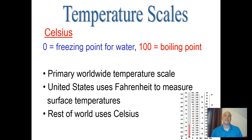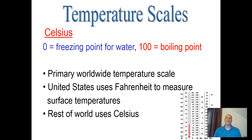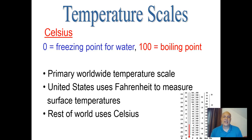When discussing temperature, we need to talk about temperature scales. Anders Celsius in 1742 developed the Celsius scale, establishing that zero equals the freezing point of water and 100 degrees equals the boiling point. In the United States, we don't use Celsius much at the surface — we do use it in meteorology on upper air charts at 5,000, 10,000, 18,000, and 30,000 feet. The rest of the world uses Celsius as the primary temperature scale.